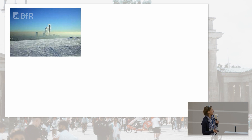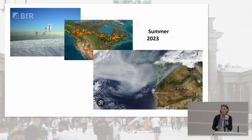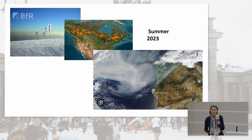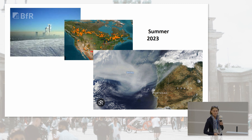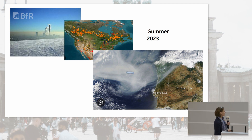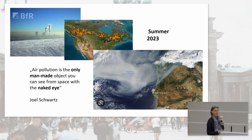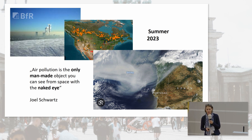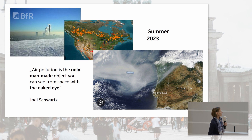Sometimes you have to get away a little bit from air pollution to be able to see it. It's also the problem — you cannot evade air pollution. It's everywhere. As an example, this is where we had the wildfires this summer in Canada, and you can see the smoke crossing the Atlantic Ocean and reaching Europe. A famous air pollution epidemiologist always says air pollution is the only man-made object you can see from space with the naked eye — you cannot even see the Chinese wall, but air pollution you can.